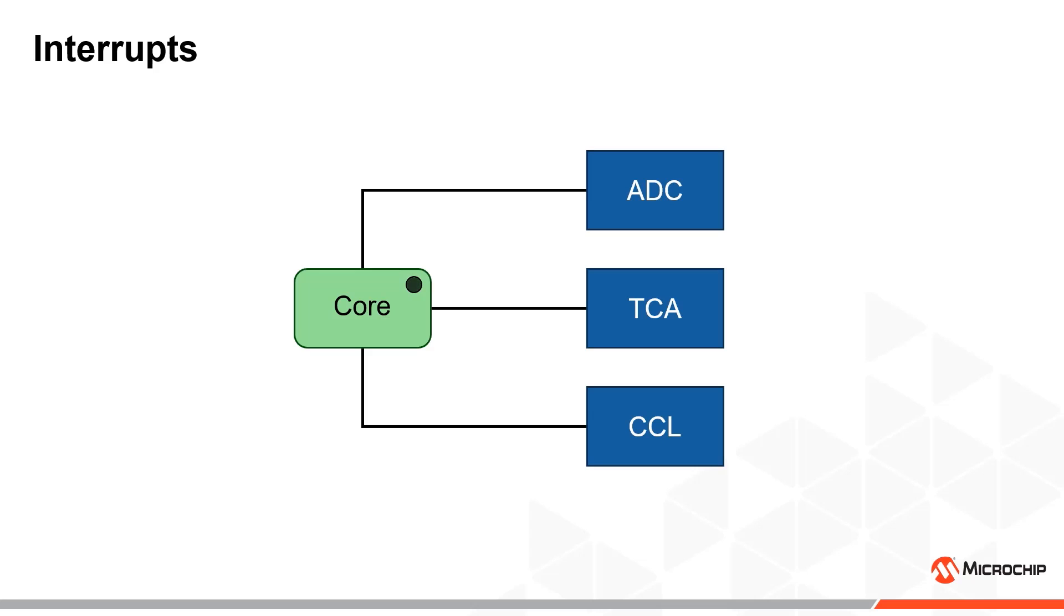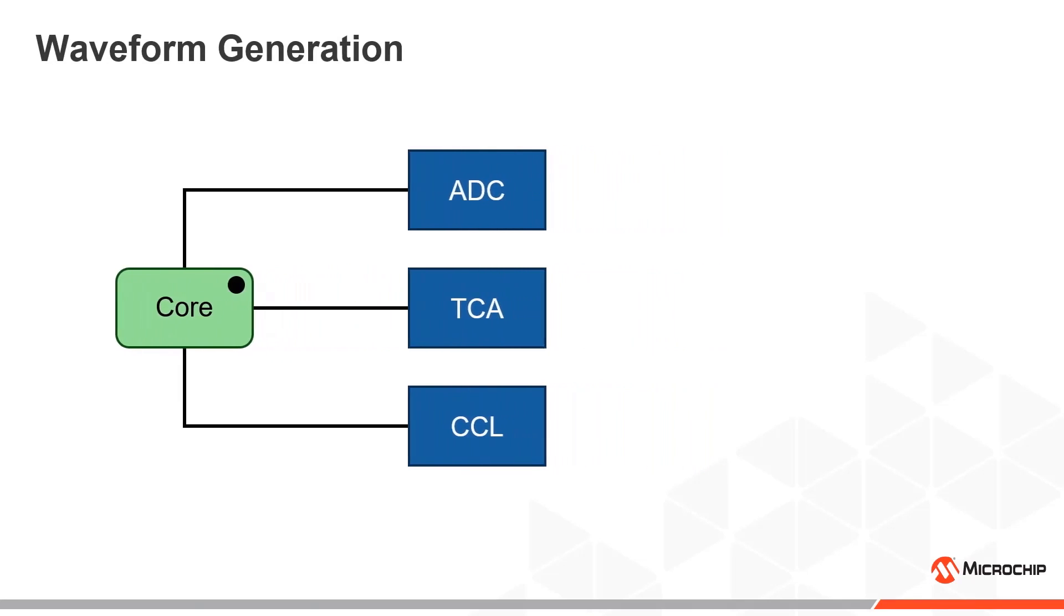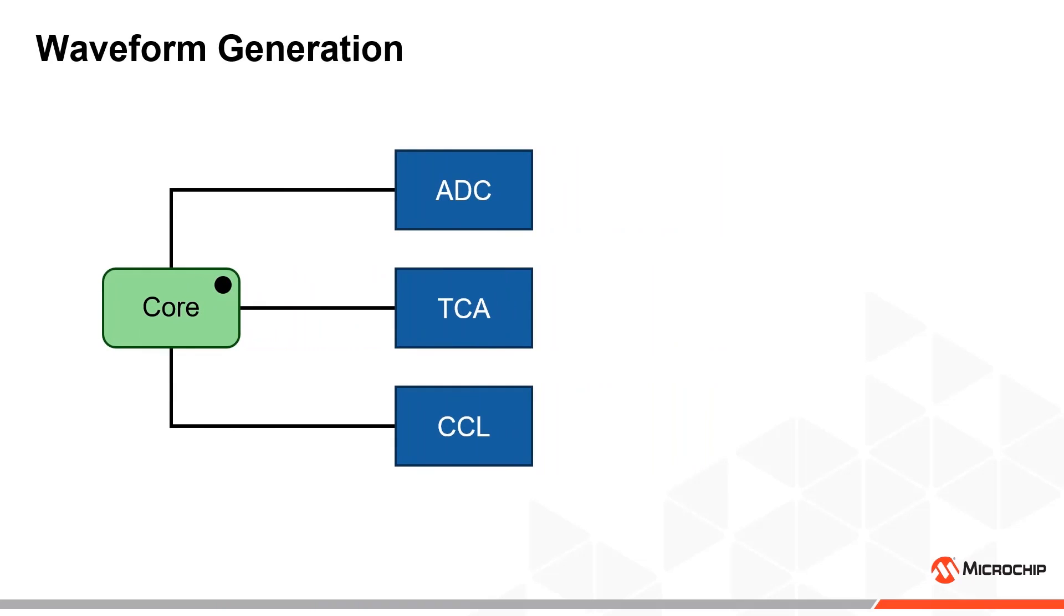Peripherals can perform a wide range of tasks independently of the core. In our application, we will for example be using the timer counter peripheral to generate a continuous 40 kHz waveform. The resulting waveform displays significantly less jitter than a waveform generated by toggling a port using the core and delays.